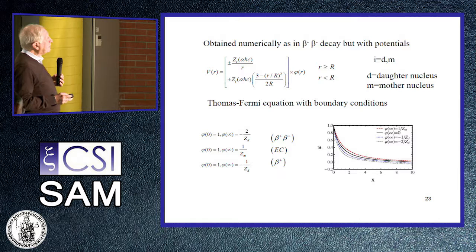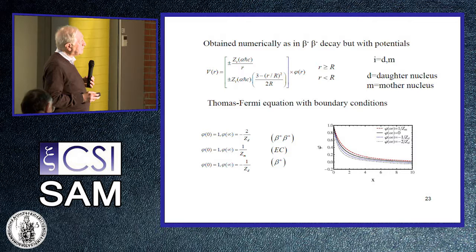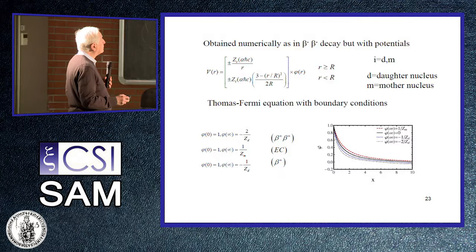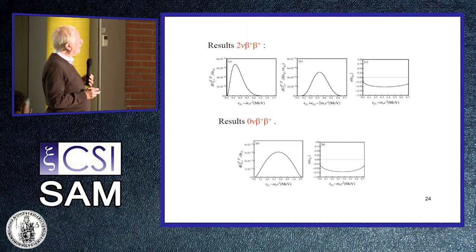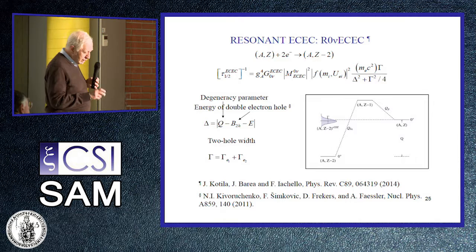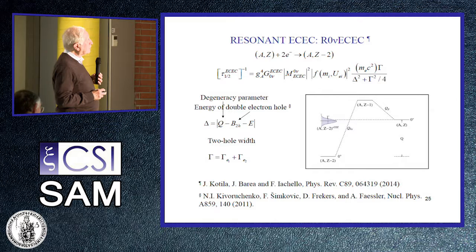The Thomas-Fermi equation for beta-plus has different boundary conditions from double-positron, electron-capture, or single-positron cases. The results are very similar to beta-minus beta-minus for both two-neutrino and zero-neutrino cases. The only case that causes problems is resonant double electron capture, which cannot occur because of energy-momentum conservation. It can only occur if accidentally the initial state energy is precisely identical to the final state energy — to within a few electron volts.